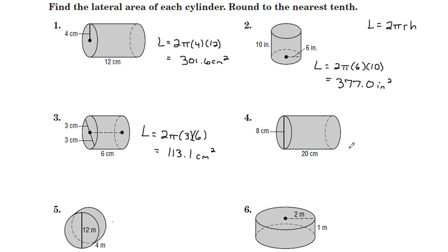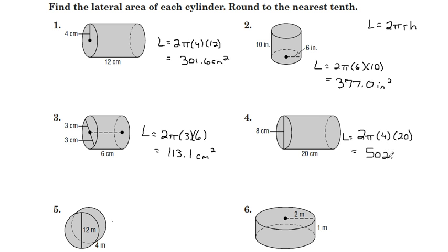Number 4 — just be on the lookout here. They give us a diameter of 8, but we know the radius is 4, and a height of 20. So the lateral surface area is 502.7 centimeters squared.